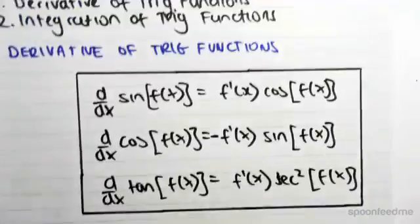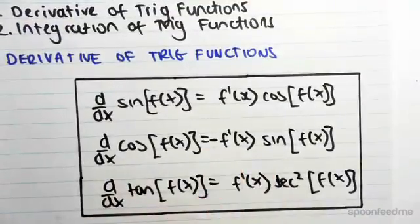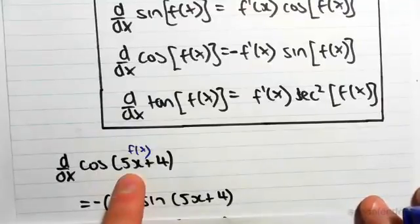So differentiating this, we're going to be using this rule here. So it's minus f'(x). The derivative of 5x + 4 is 5.